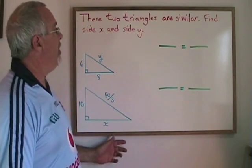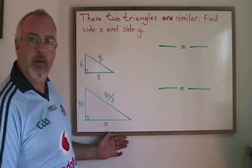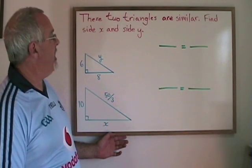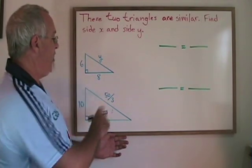Here's another example where we are given two similar triangles and we're asked to find some missing side lengths. In this case, we are not given a ratio of similarity, so we have to find one from within the situation.